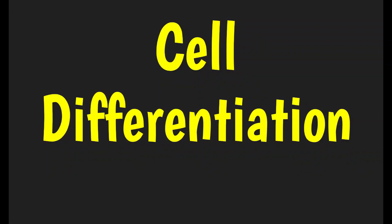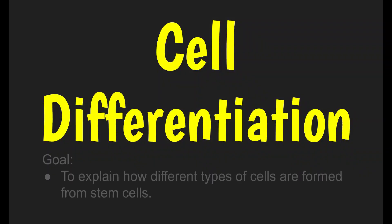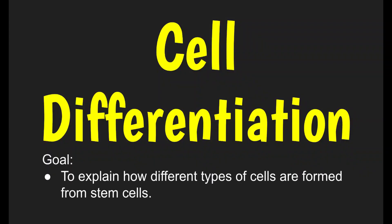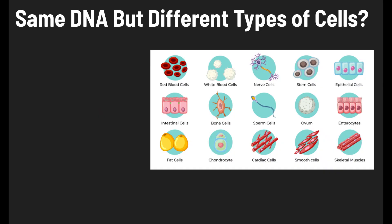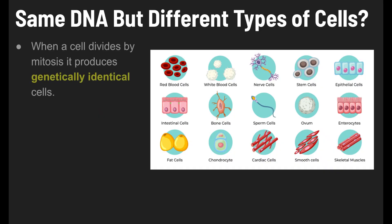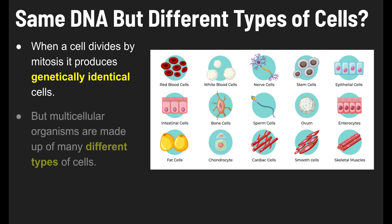Today we're going to talk about cell differentiation, and the goal of this video is to explain how different types of cells are formed from stem cells. When a cell divides by mitosis, it produces two genetically identical cells.